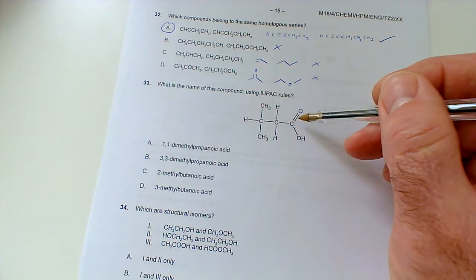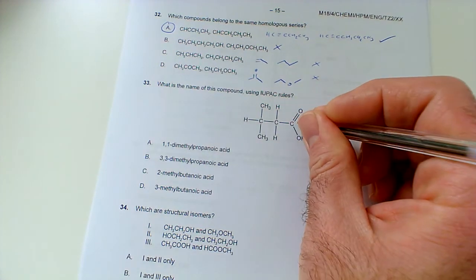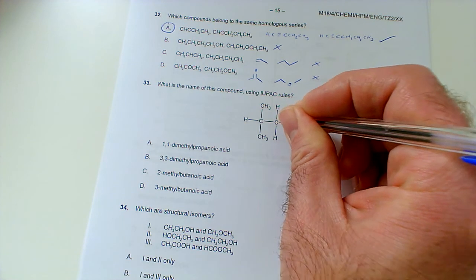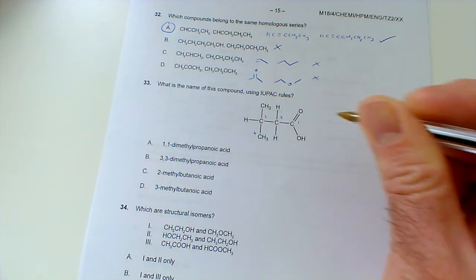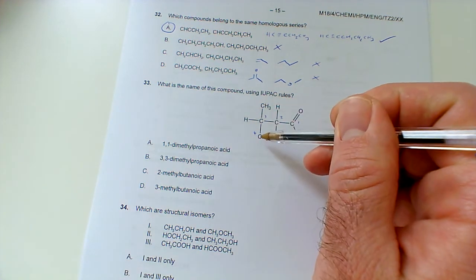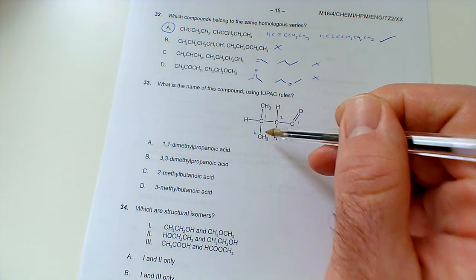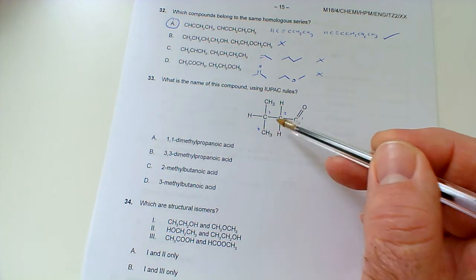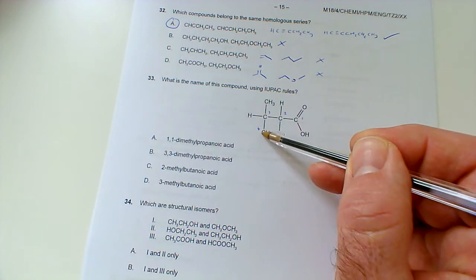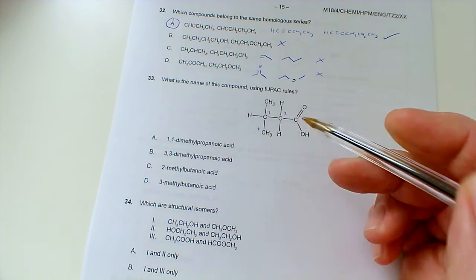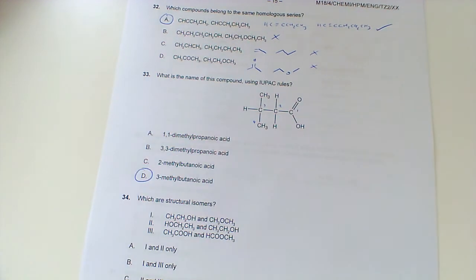What is the name of this compound using IUPAC rules? Okay, so, find the longest chain, start at the carboxylic acid. 1, 2, 3, and then 4. So, although they put a bit of a dog leg in it to confuse you into thinking that it's propanoic acid, it's actually 4 compounds in the longest chain. So, that will be butanoic acid, and there's a methyl group on position 3. So, it will be D.